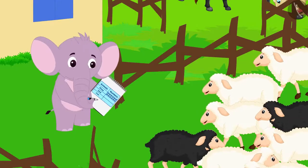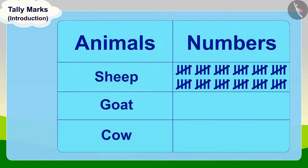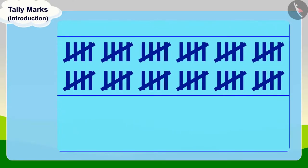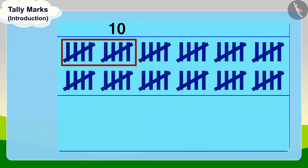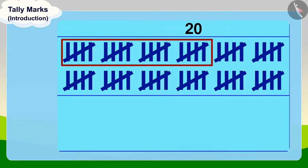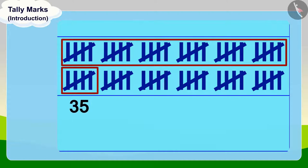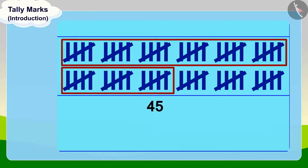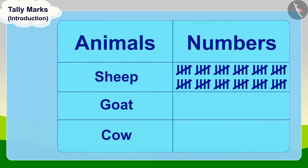Appu got very excited and immediately began counting those groups of five: 5, 10, 15, 20, 25, 30, 35, 40, 45, 50, 55, and 60. There are a total of 60 sheep.